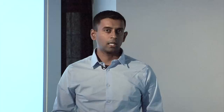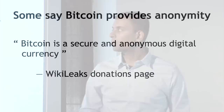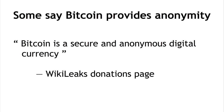If you look online, you'll see there are a number of people and groups saying that Bitcoin is anonymous. Let me pull out one quote in particular. This is the WikiLeaks donation page. It says, in plain and simple terms, Bitcoin is a secure and anonymous currency. Is that actually true? Well, you'll also find a variety of opinions to the contrary. This is Wired UK saying Bitcoin won't hide you from the NSA's prying eyes. So how can we resolve this confusion?